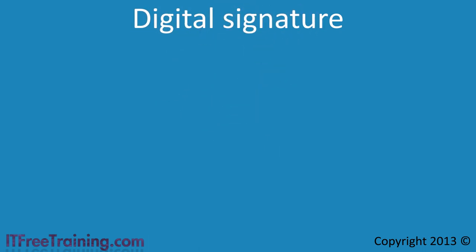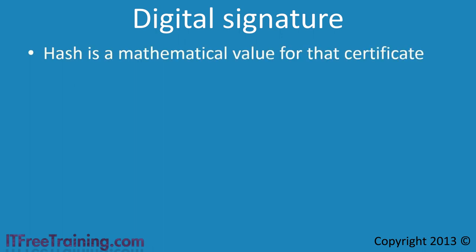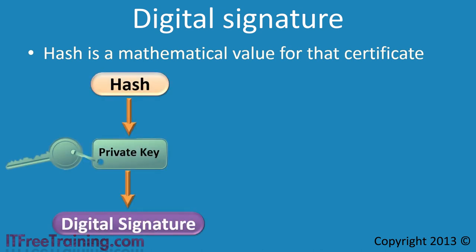To understand how certificates work, it helps to have a closer look at the digital signature. The hash value is a value that represents the certificate. The hash is calculated by putting the certificate through a mathematical function to produce a value. A simple hash function would be to add each byte in the file together to obtain a single number — though the hash function used in certificates is more complex than this. The hash value is then put through a mathematical function using the private key to generate a digital signature, which is then added to the certificate.